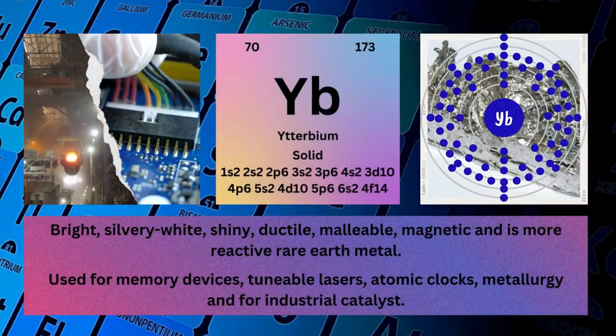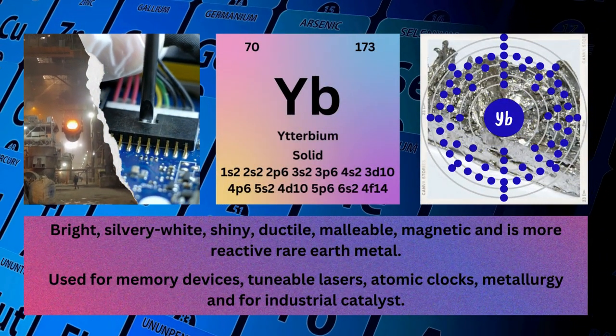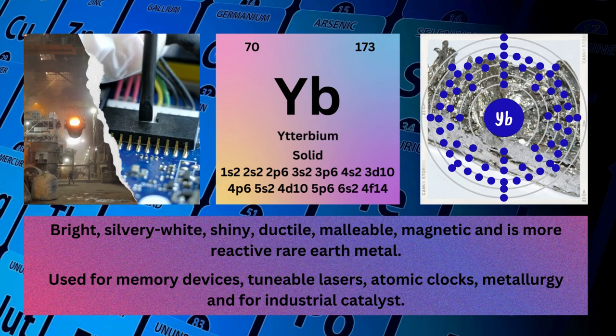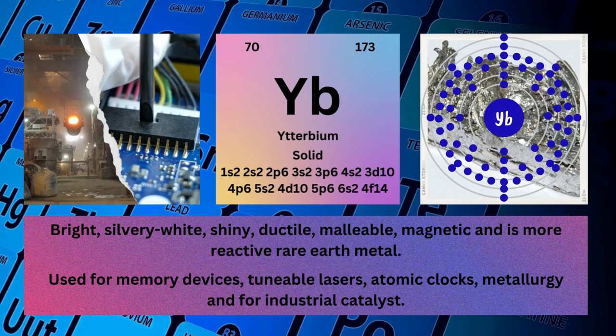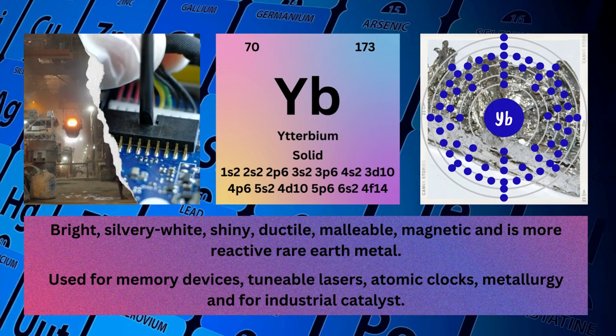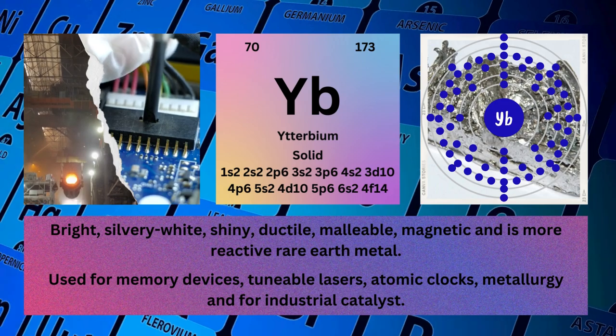Ytterbium. Atomic number: 70. Mass number: 173. Symbol: Yb.